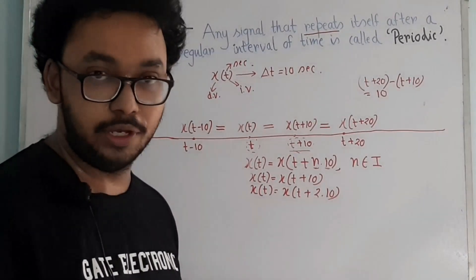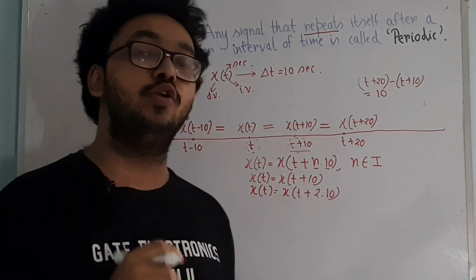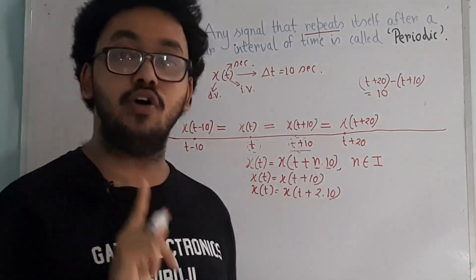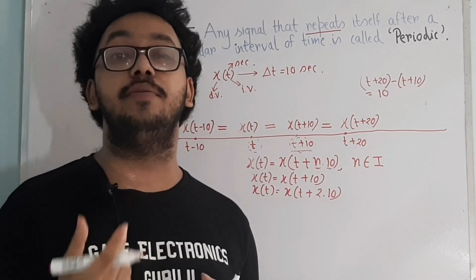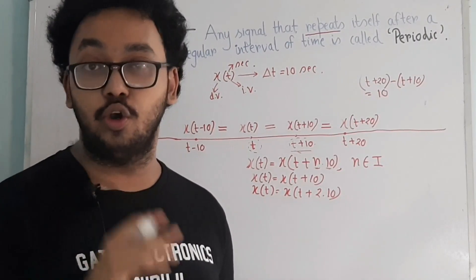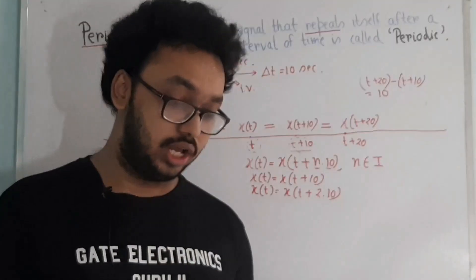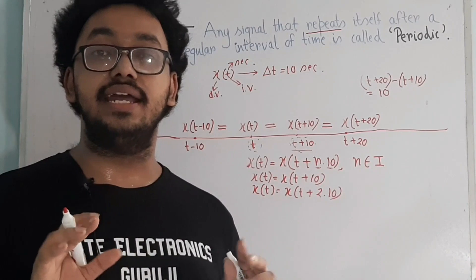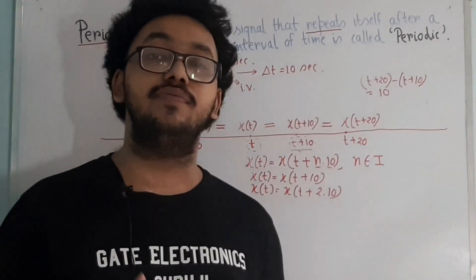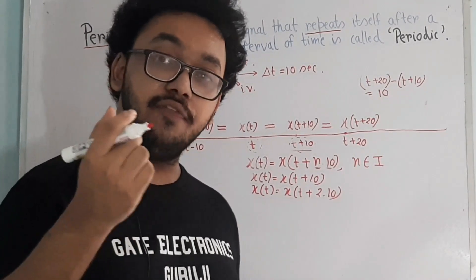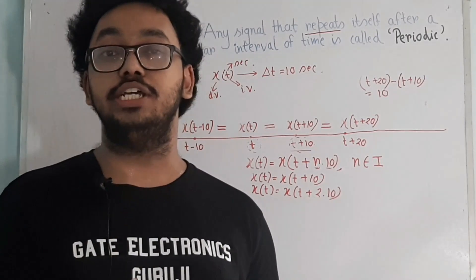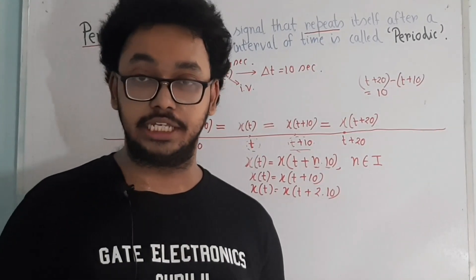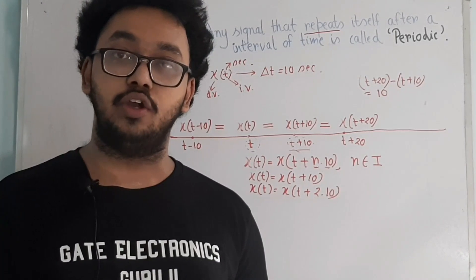Now, what do we mean by fundamental time period? The smallest positive time interval after which the signal repeats itself is termed the fundamental time period of the signal. The difference from time period is that in the definition of time period we only say 'the time interval after which the signal repeats,' whereas fundamental time period specifies the smallest positive such interval.